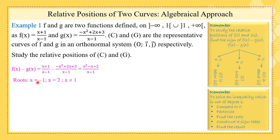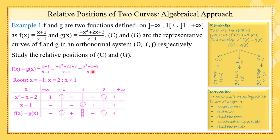The roots are X equals negative 1 and X equals 2 from the numerator, and X equals 1 from the denominator. We draw the sign table. This is a polynomial of degree 2 having two roots, so we apply same-opposite-same. This is a binomial of degree 1, so we apply opposite-same. This gives us the result for F of X minus G of X.